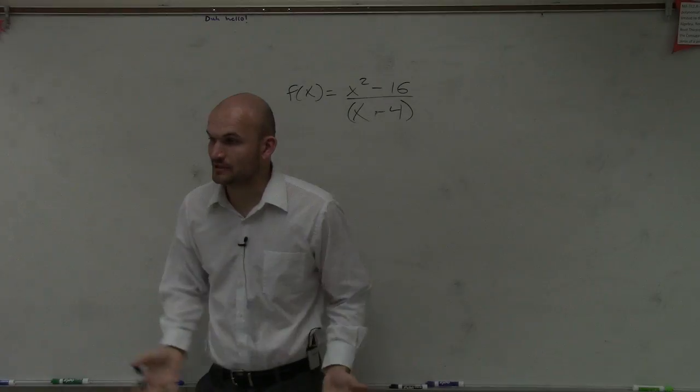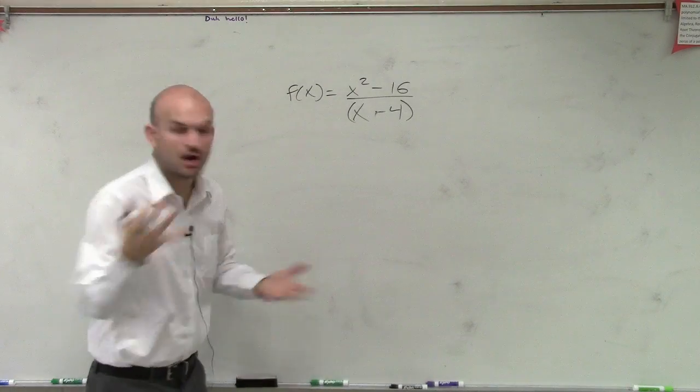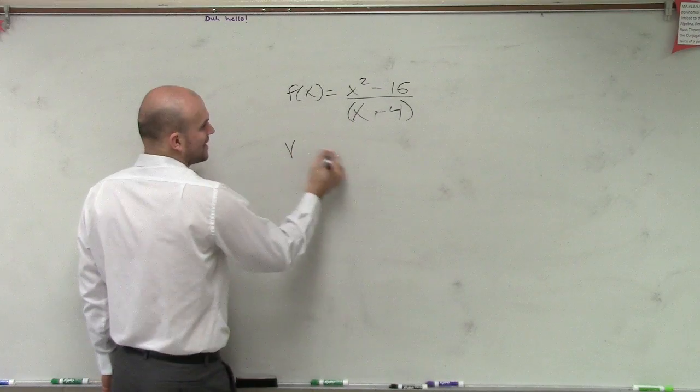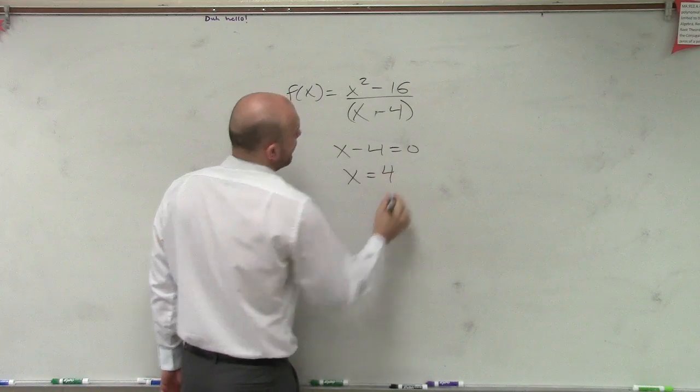Ladies and gentlemen, on the last problem we need to graph this one. We're just going to go through the algorithm. You say, okay, find the vertical asymptote. The vertical asymptote is when x minus 4 equals 0, so x equals 4.